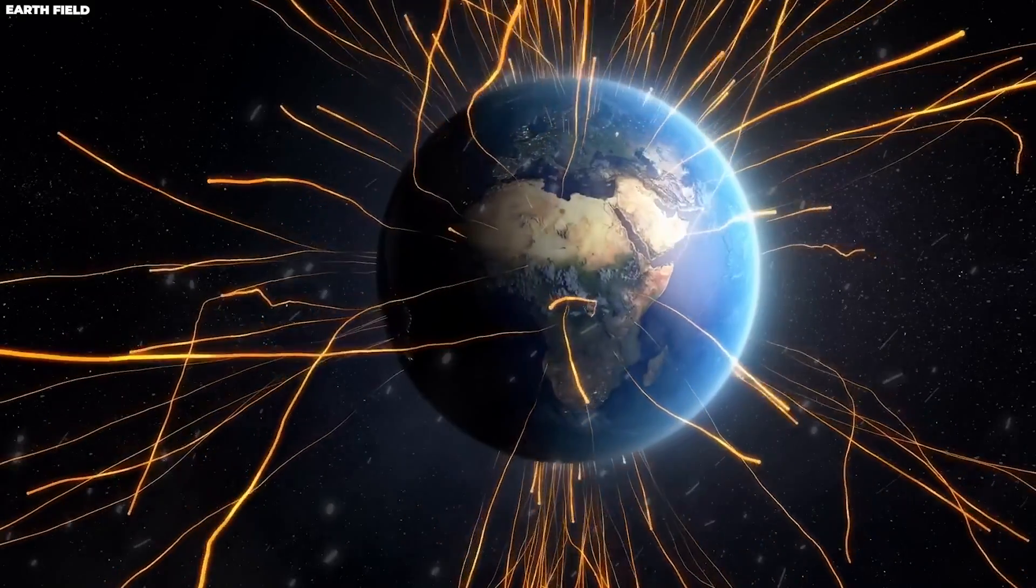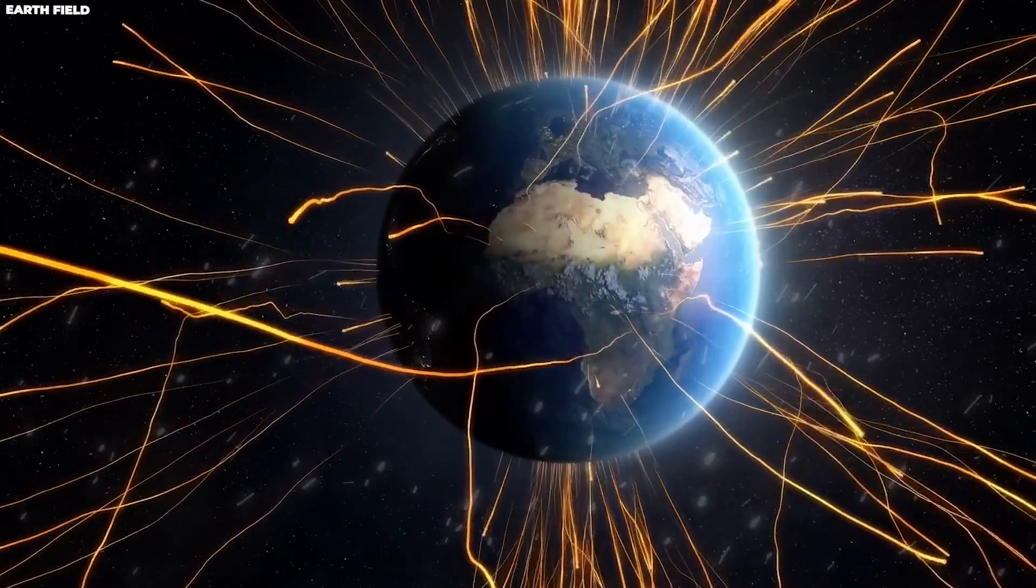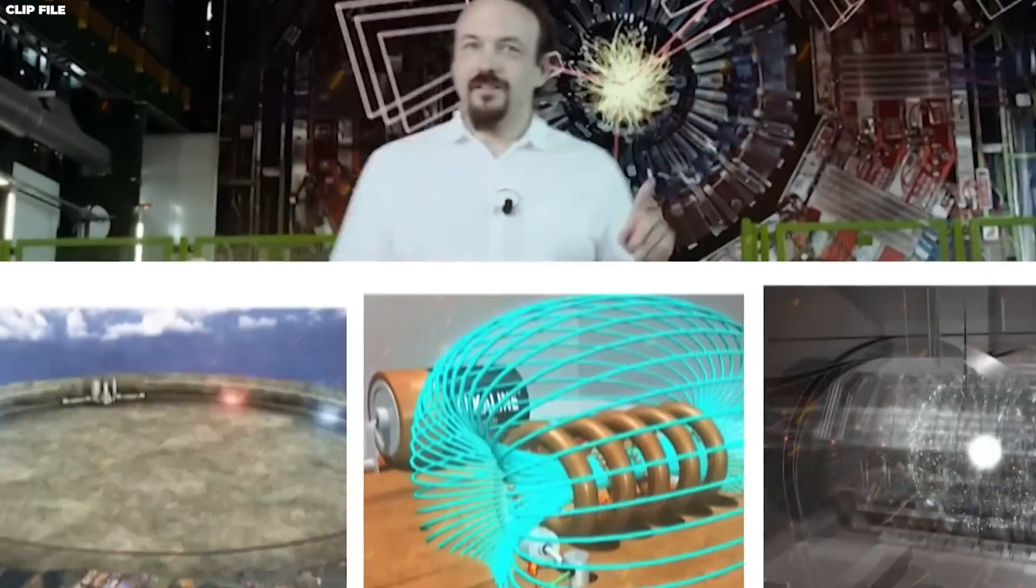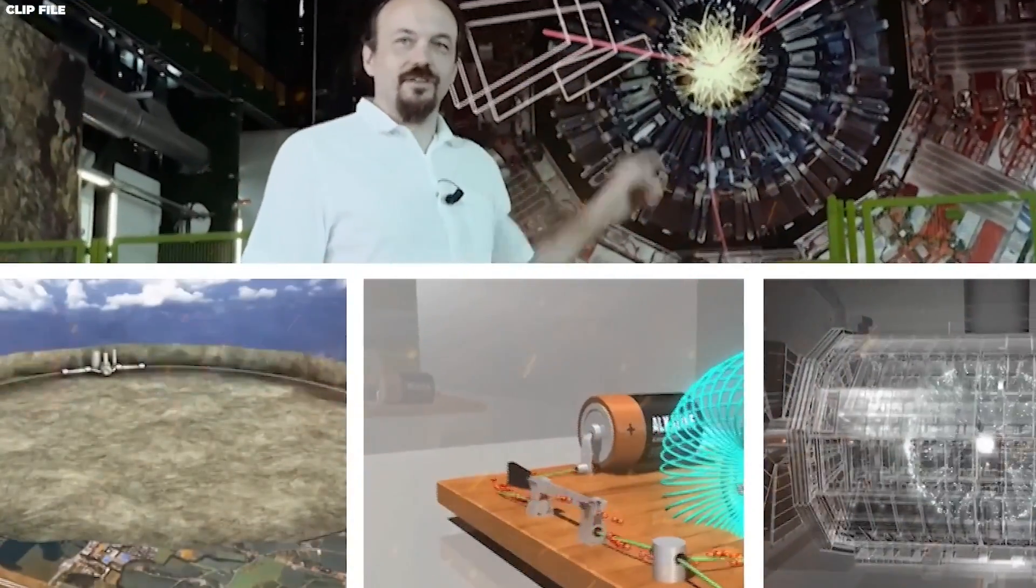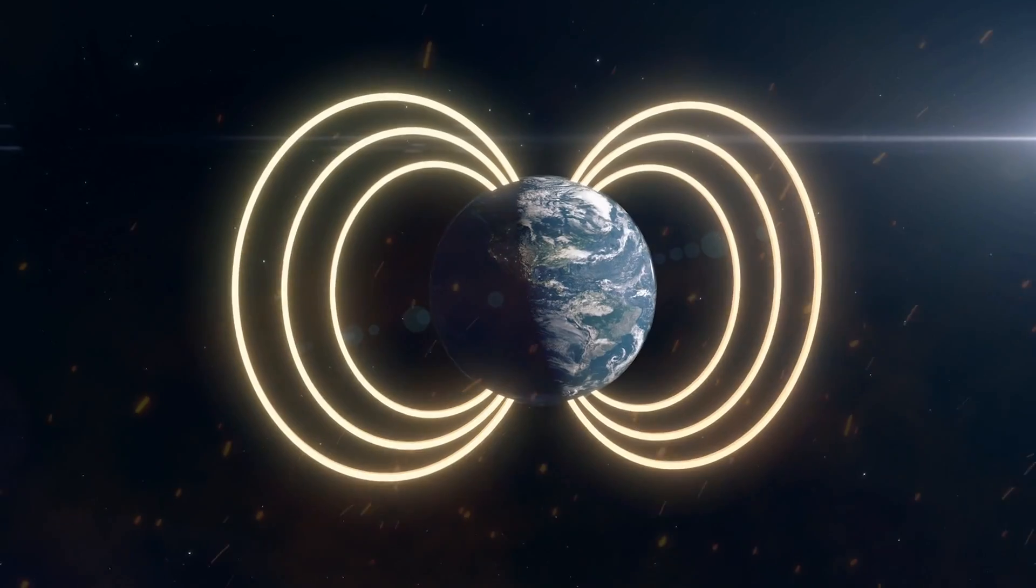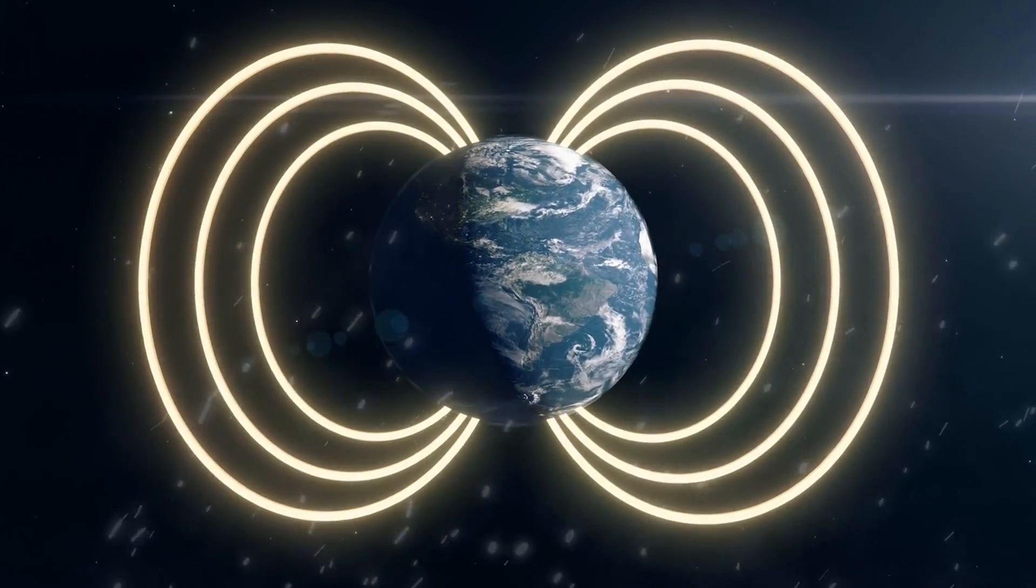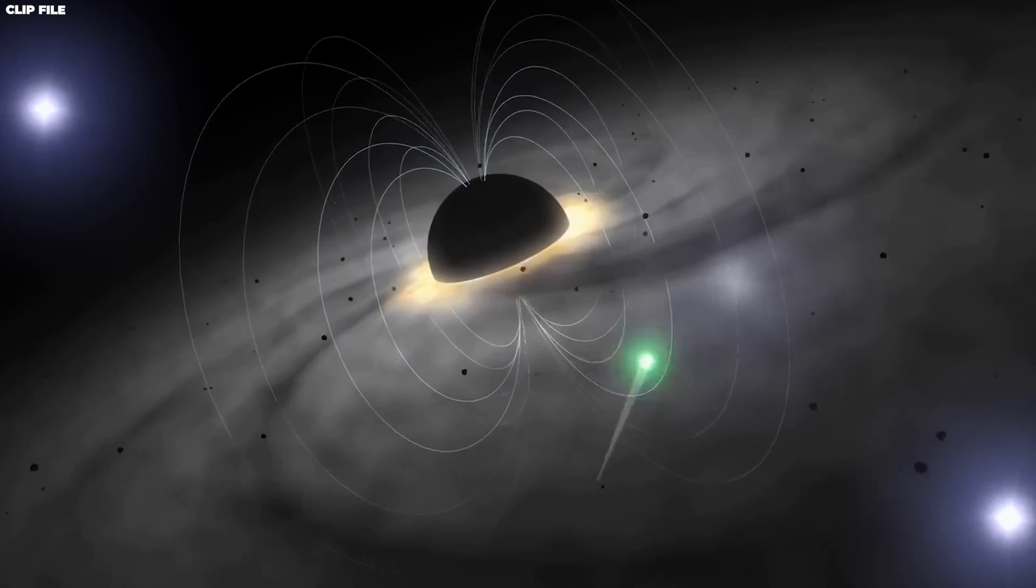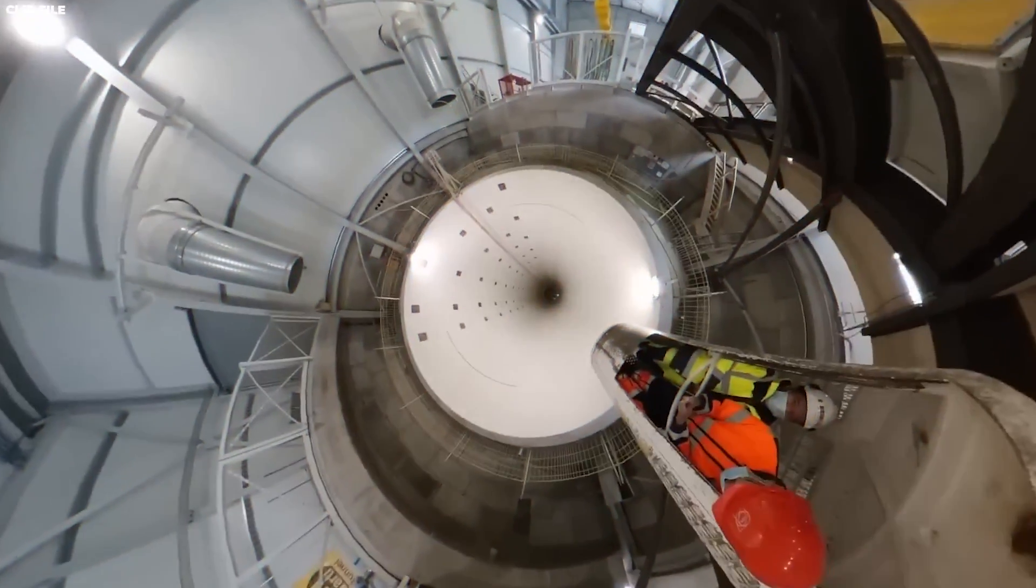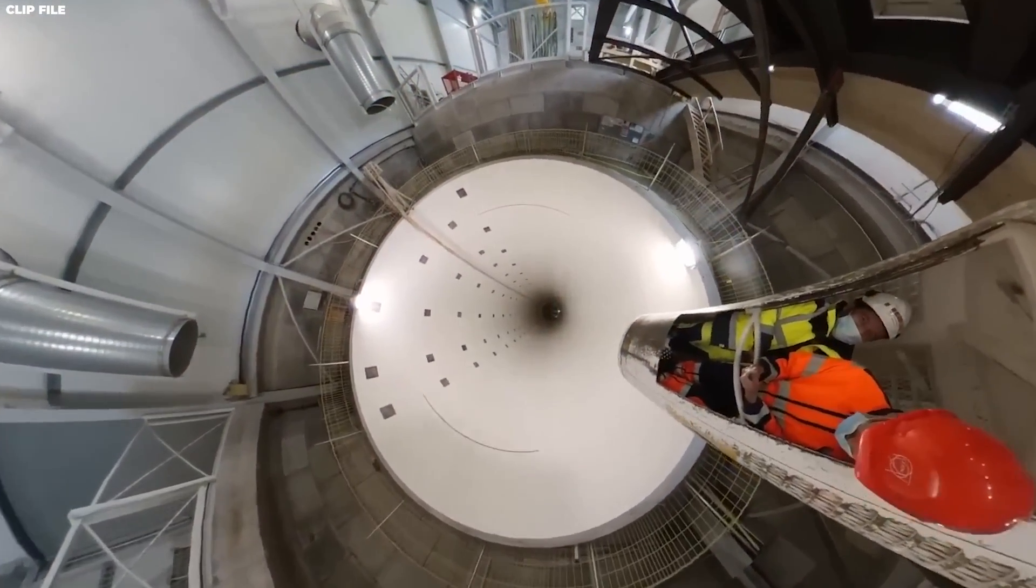People began to believe that CERN was opening a door through which something from another world could pass when this news was released at the same time as other strange news. Despite the fact that a hole was opened up in the Earth's magnetic field, experts say there is no cause for concern. Still, the experts agree that while the hole was open, it let especially strong solar winds pass through.